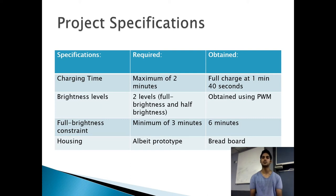We required two brightness levels, full brightness and half brightness. Both were obtained using a PWM. For the full brightness constraint, our torch was required to hold the full brightness for three minutes. We obtained a maximum of six minutes.